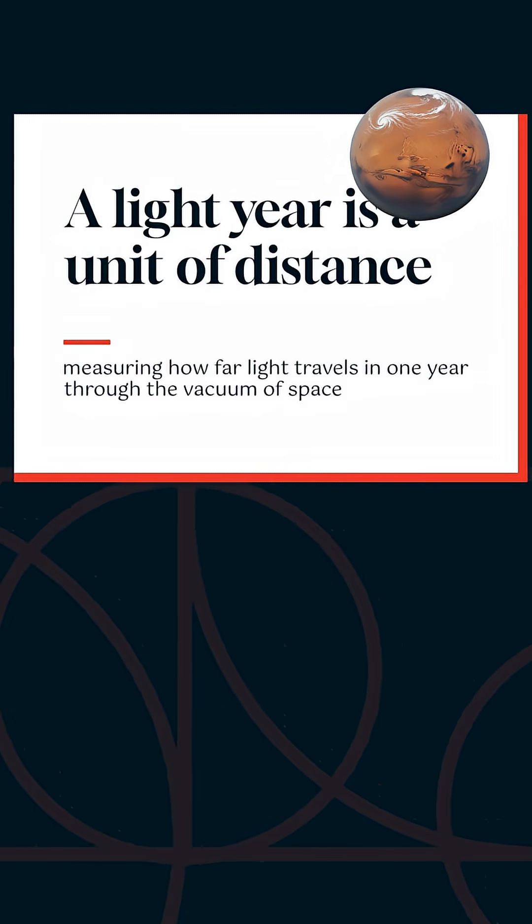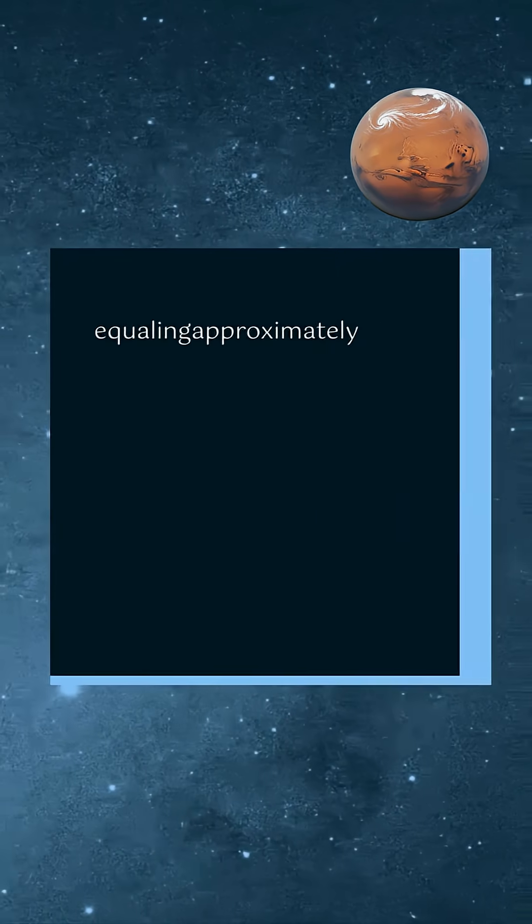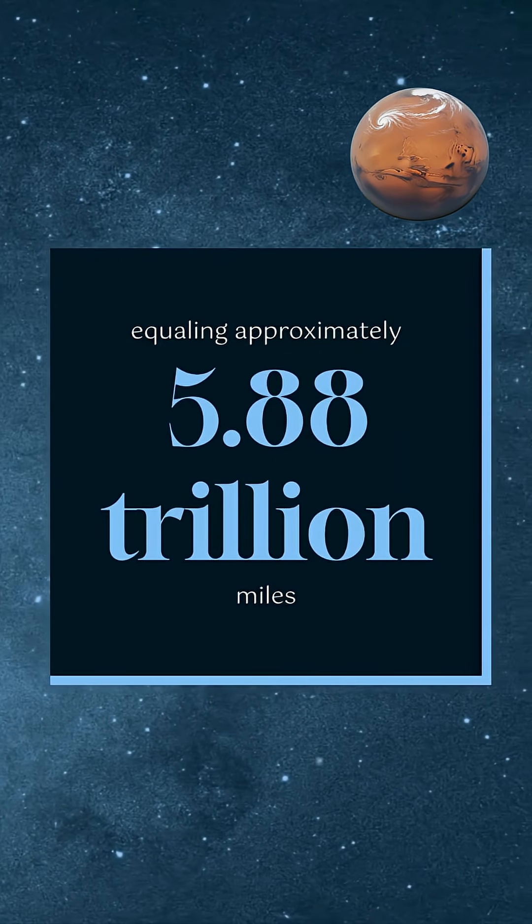A light year is a unit of distance measuring how far light travels in one year through the vacuum of space, equaling approximately 5.88 trillion miles.